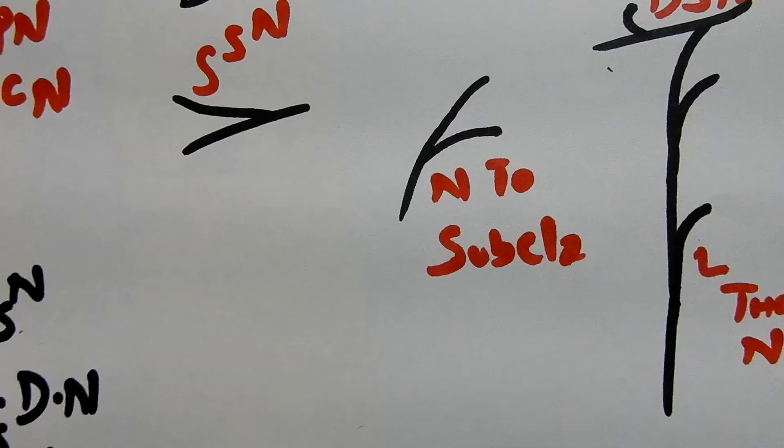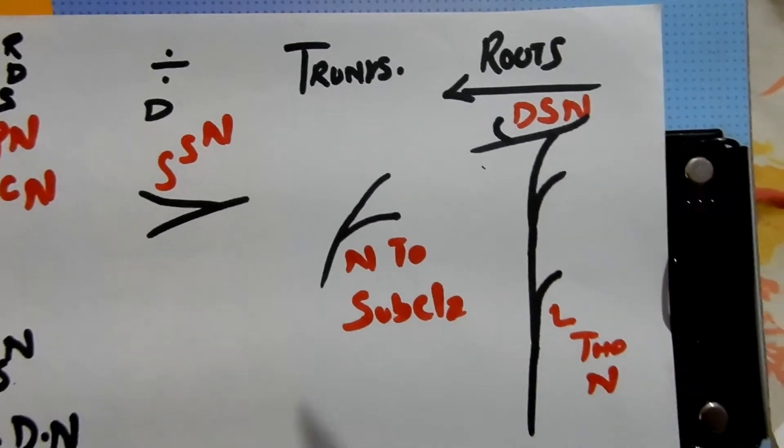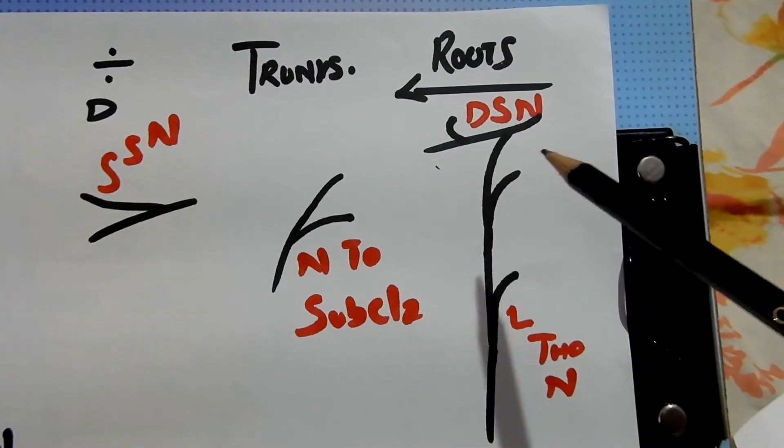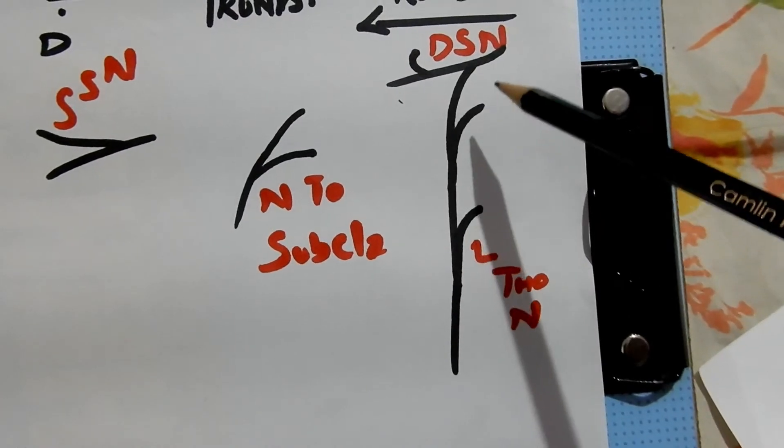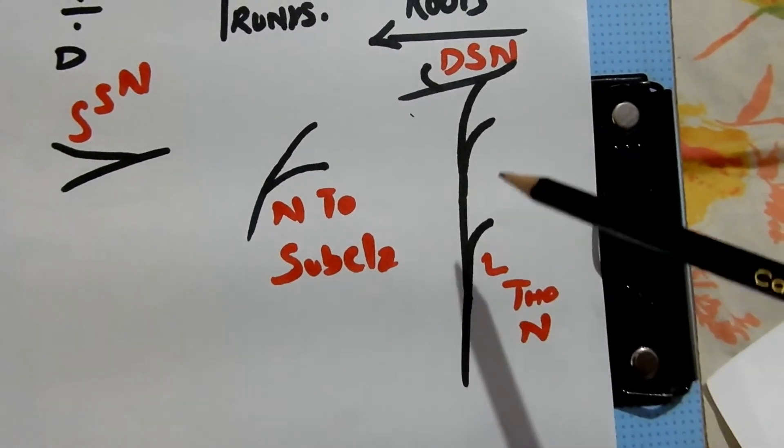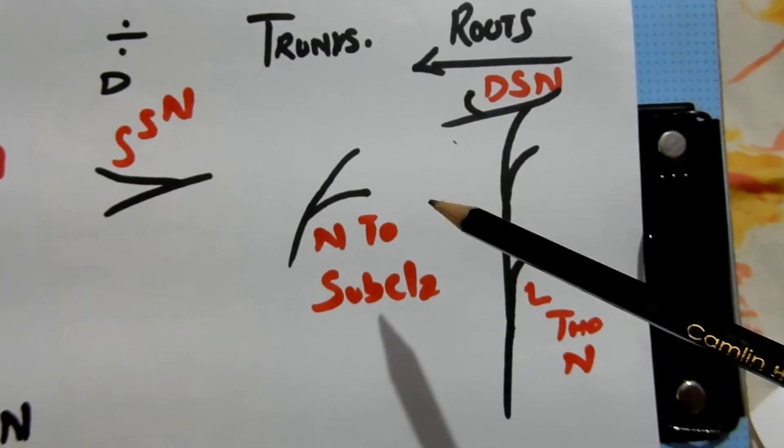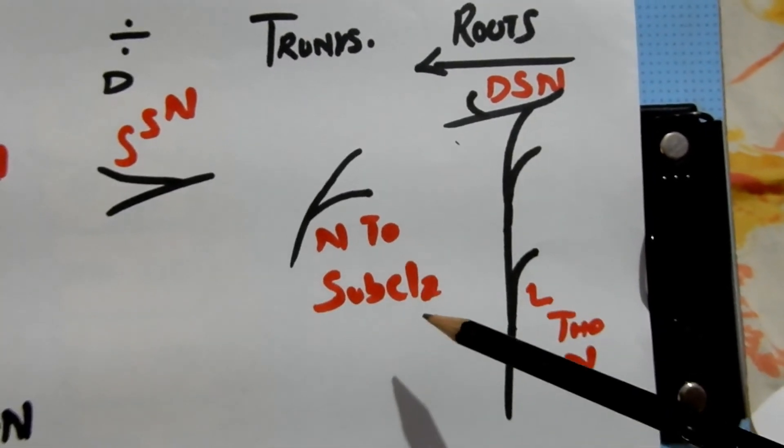The roots give off two nerves: dorsal scapular nerve and long thoracic nerve. This particular branch arises here - textbooks have more beautiful diagrams, please refer to them. The trunks give a branch called nerve to subclavius, this particular branch from the trunk.